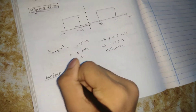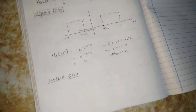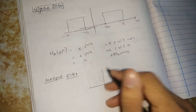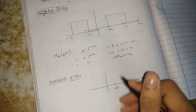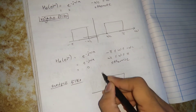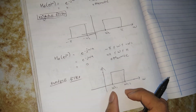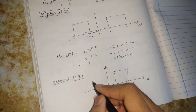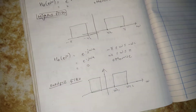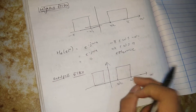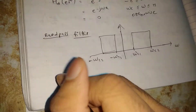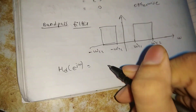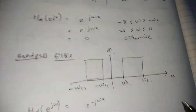Now we will talk about the band pass filter. In band pass filter, if you draw a diagram, this is omega C1, this is omega C2, and this is the omega axis. Only this particular band — between omega C1 and omega C2 — will pass. Draw a mirror image, exactly opposite. So minus omega C2 is on this end and minus omega C1 is here. Now write the equation: HD of e raised to j omega equals e raised to minus j omega alpha.